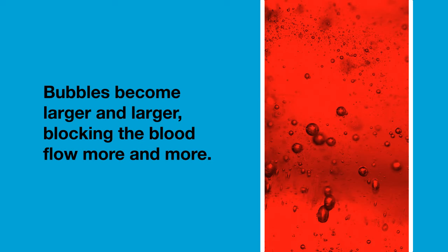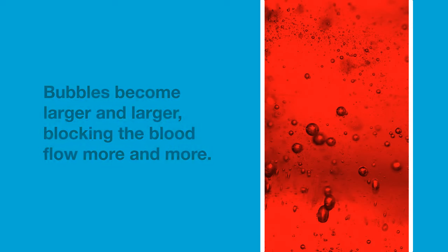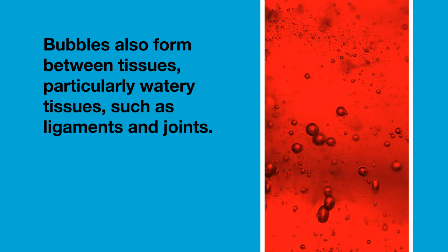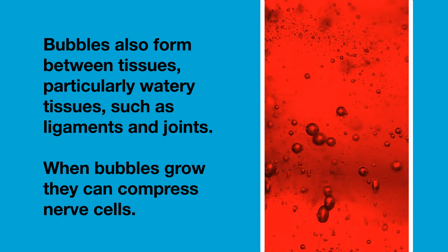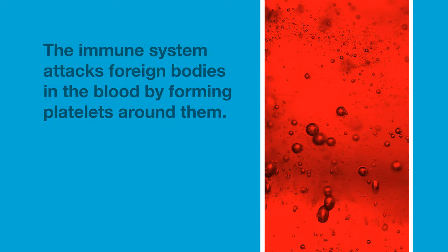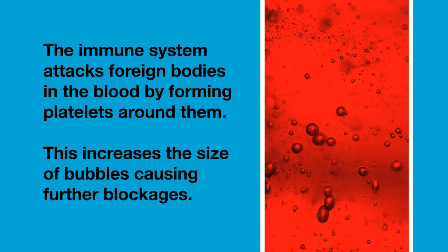The bubbles become larger and larger, blocking blood flow more and more. Bubbles don't only form in your blood — they also form between tissues, particularly in watery tissues such as your ligaments and joints. As the bubbles grow, they can compress nerve cells, and that hurts. To make things worse, your immune system attacks foreign bodies in the blood by forming platelets around them, so it also attacks the bubbles, increasing their size and causing further blockages.